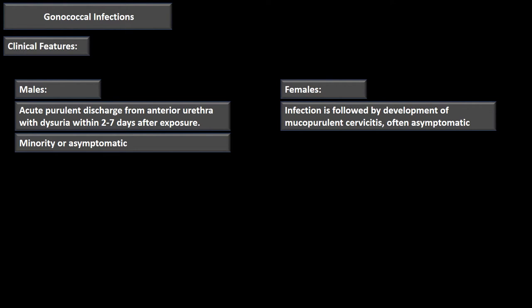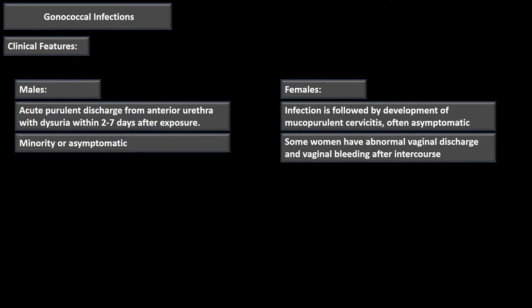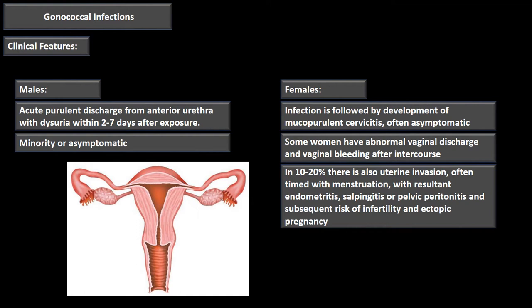In females, the infection is followed by development of mucopurulent cervicitis and is often asymptomatic. Usually the infection is in the cervix. Some women have abnormal vaginal discharge and vaginal bleeding after intercourse, but in a small percent — 10 to 20 percent — there is also uterine invasion, often timed with menstruation. As a result, they can get endometritis, salpingitis, pelvic peritonitis, and subsequent risk of infertility and ectopic pregnancy.